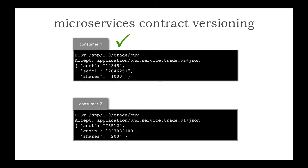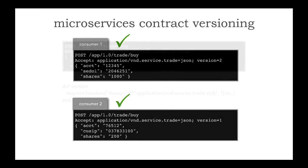Now let's do consumer 2, who wants to also do a trade but use a QCIP. It's still a buy for Apple for 200 shares, but notice the vendor MIME type in the Accept header: VND.service.trade.V1 of the JSON object. And that works perfectly fine as well. Depending on your implementation, a lot of times I can actually use an attribute — version equals 2 or version equals 1 — which also allows me to parse that out.